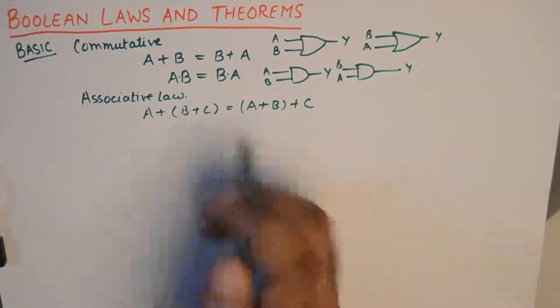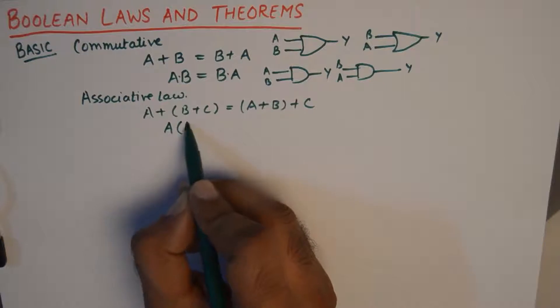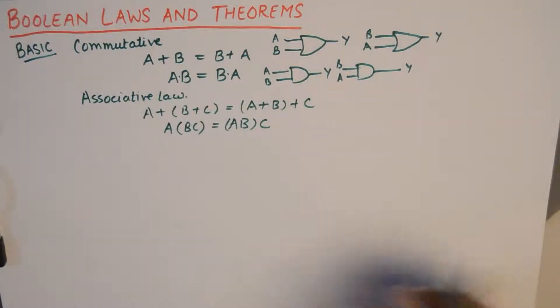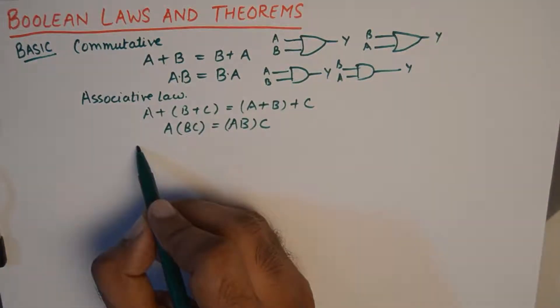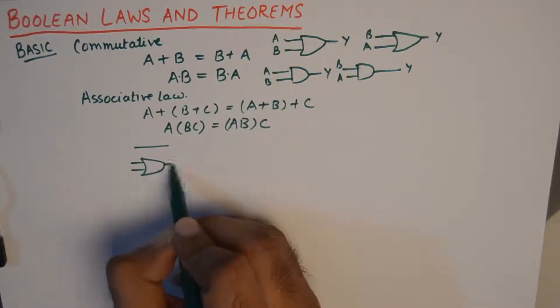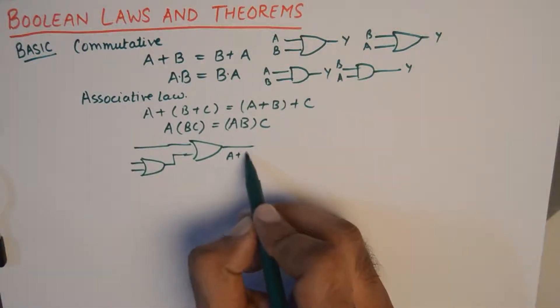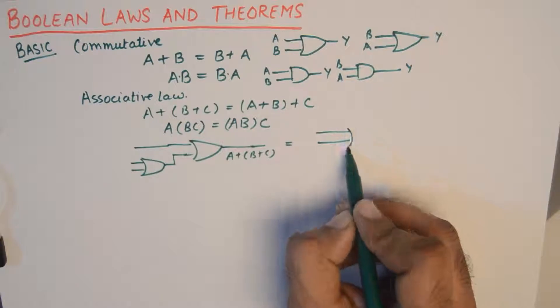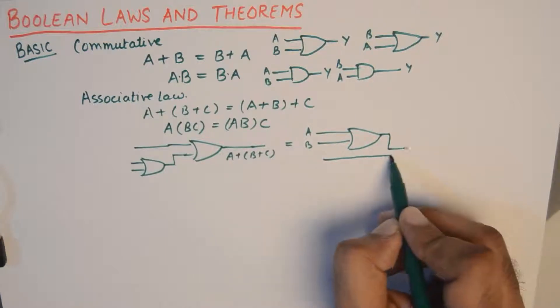And the multiplicative version of the associative law is A and B and C in parenthesis equals A and B in parenthesis multiplied by C. So for the first equation the equivalent circuit looks something like this. You got A and then you got B and C being ORed first. And then the final thing is A plus B plus C. So this is equivalent to if you OR A plus B first and then OR this output with C.